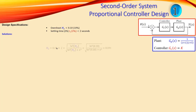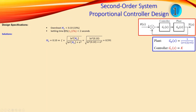Starting with the damping ratio: we use the overshoot of 0.10 and calculate the damping ratio ζ using the standard formula. Substituting the values, we get ζ approximately equal to 0.591.